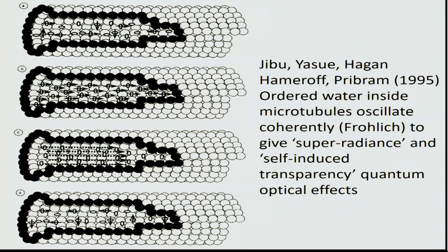Back in 1995, I was involved in a paper with Jibu, Yasui, Hagen, and Pribram about ordered water inside microtubules oscillating coherently according to the Fröhlich oscillation, giving quantum optical effects called super-radiance and self-induced transparency. The idea was that as these proteins oscillated, they caused water dipoles to oscillate, leading to quantum field theory effects suggesting there may actually be photons — infrared and perhaps higher frequency photons — generated in living systems. There's also ordered functional coherent light.